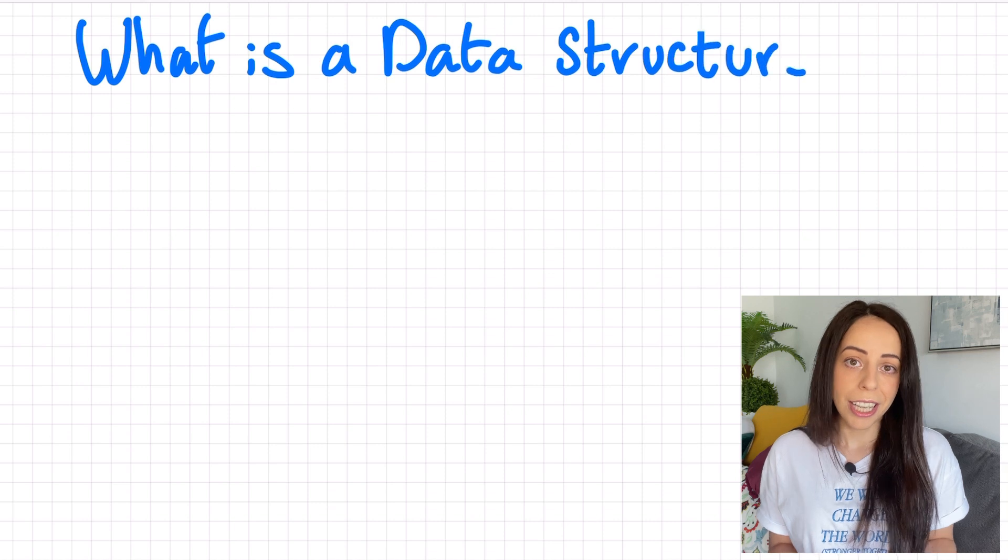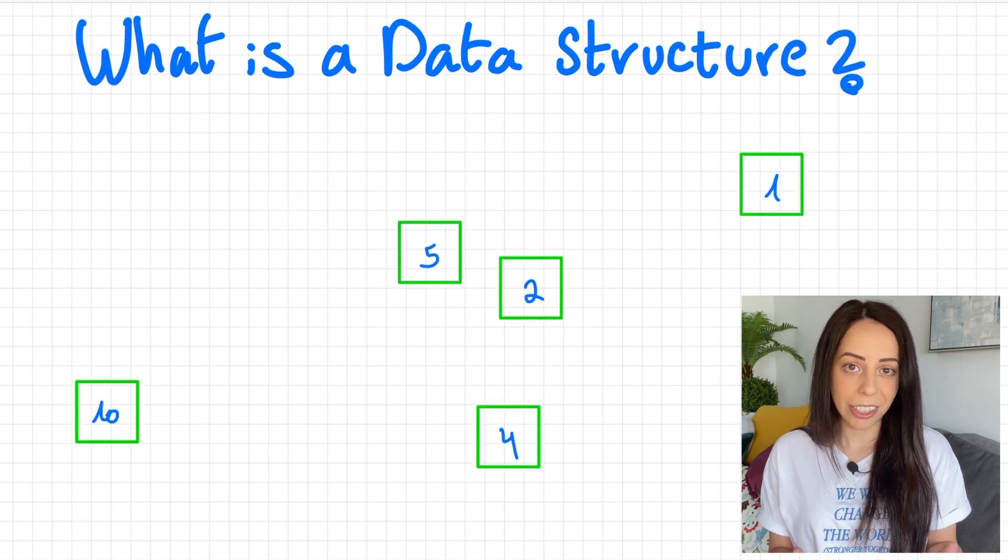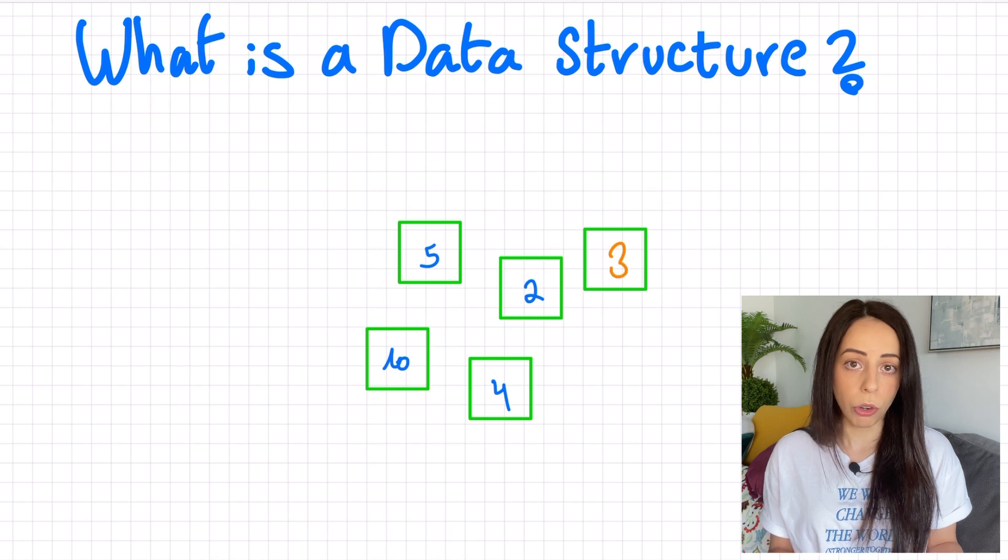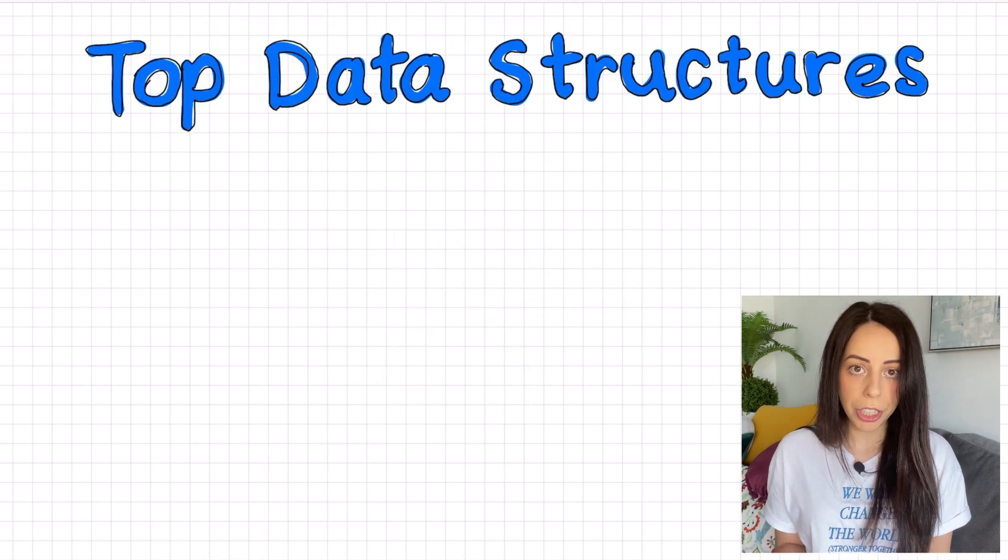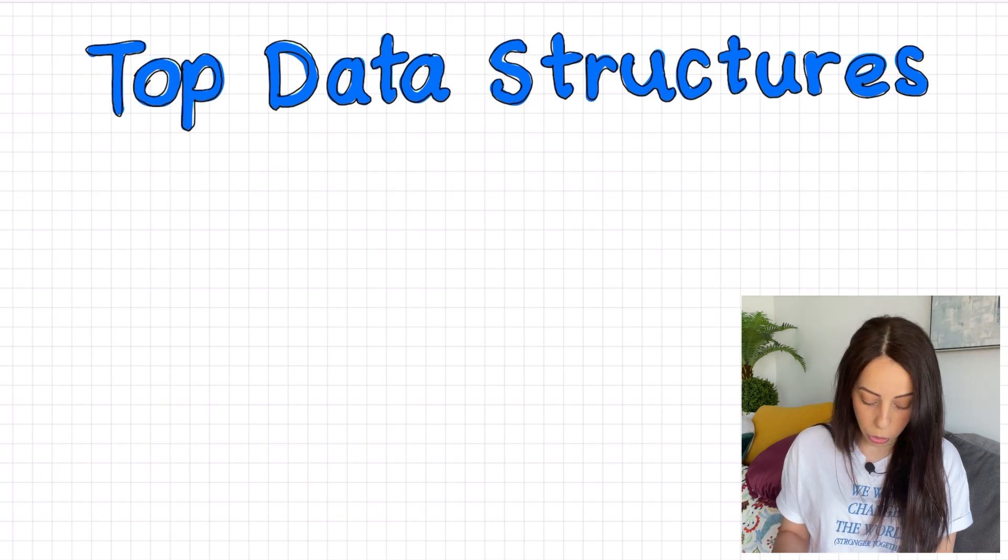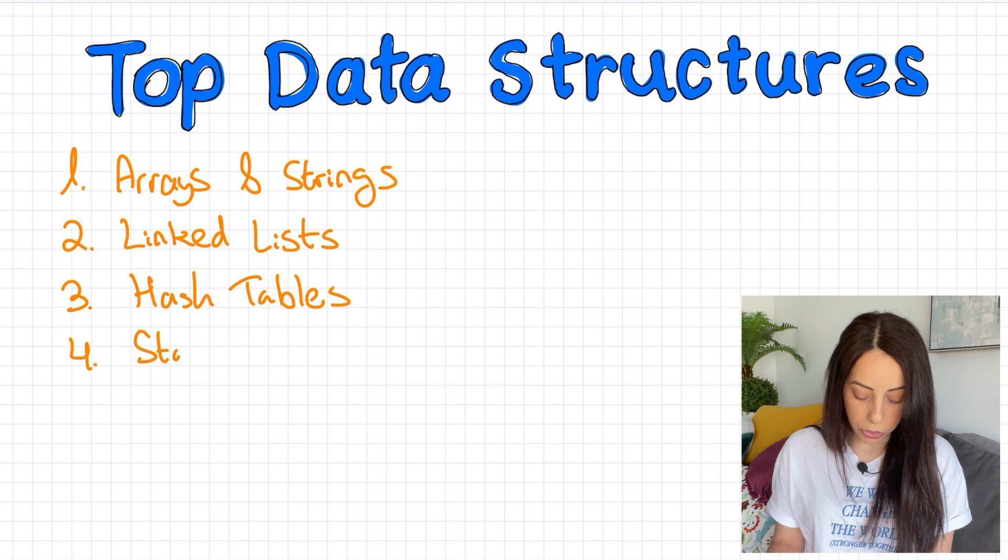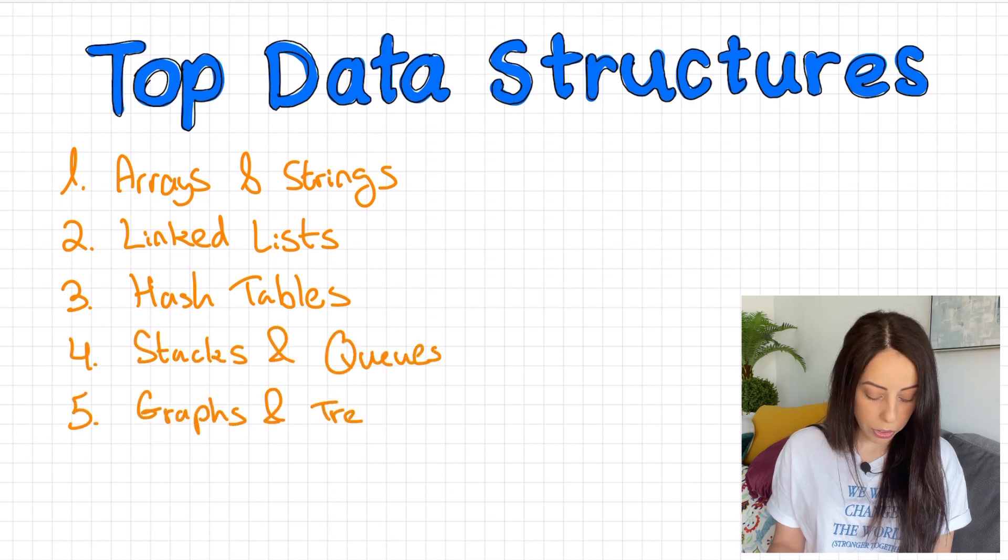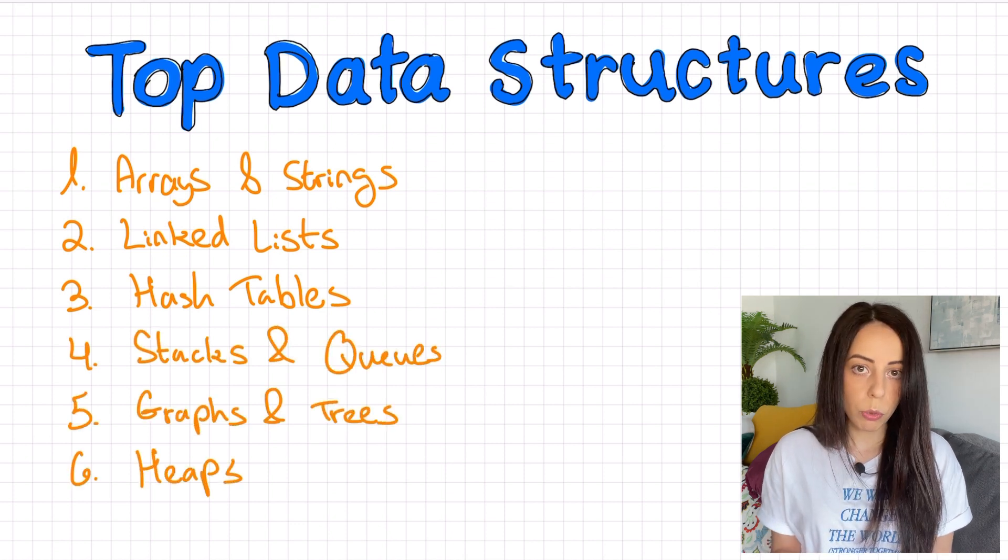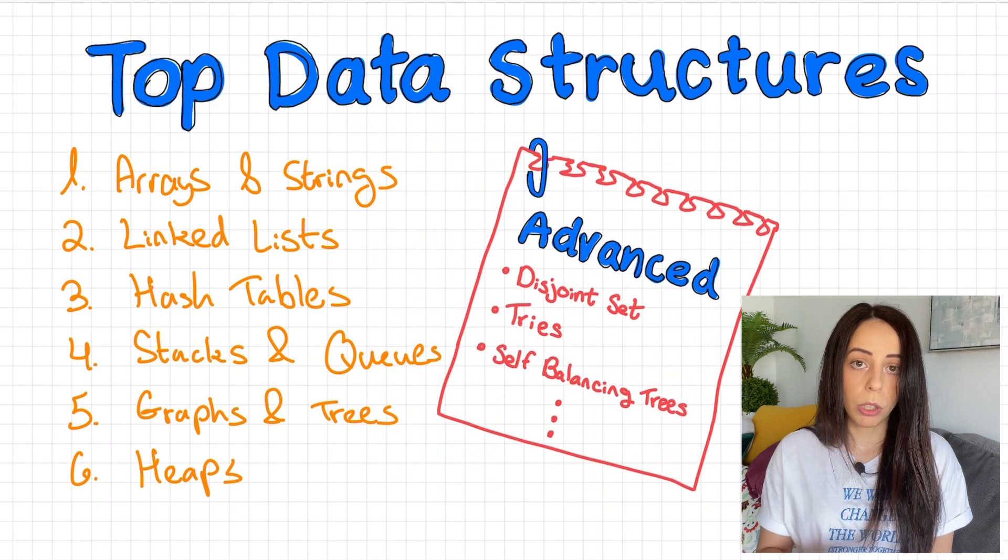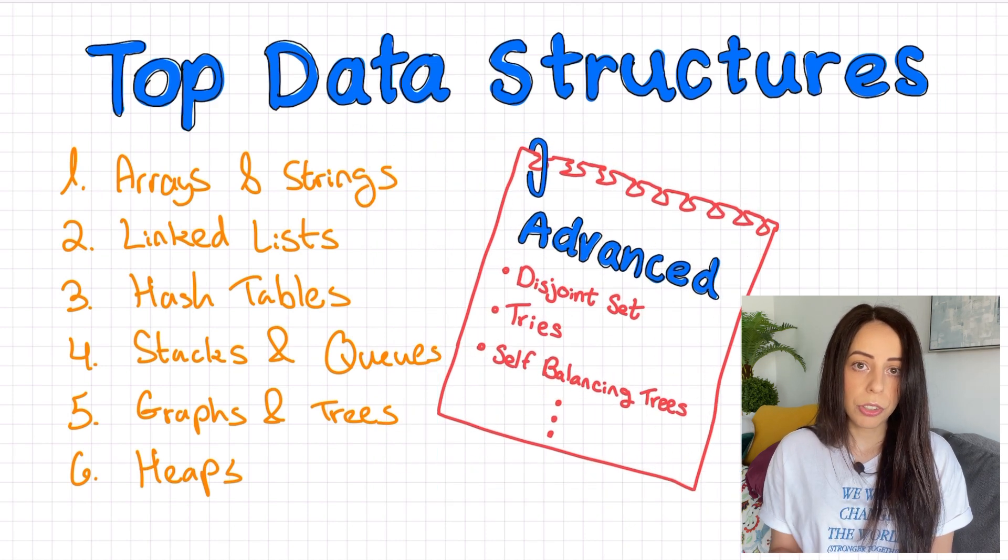First of all, what is a data structure? A data structure is a format that organizes a collection of data points in a way that makes accessing and modifying these points more convenient and or more efficient. The top data structures that you need to know and will be covered in this video are arrays and strings, linked lists, hash tables, stacks and queues, graphs and trees, and lastly, heaps. If you know these ones, you are like 98% covered. There are more advanced data structures that will live out for a different video. But again, just knowing these basic ones will be sufficient for most coding interviews.